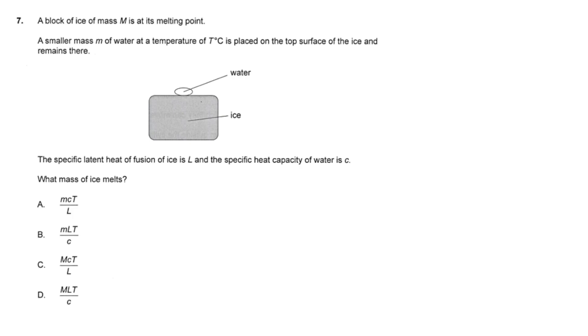IB Physics M2025, time zone 2, SLP 1A, question 7. A block of ice of mass M is at its melting point. A smaller mass m of water at a temperature of T degrees Celsius is placed on the top surface of the ice and remains there. The specific latent heat of fusion of ice is L, and the specific heat capacity of water is c.